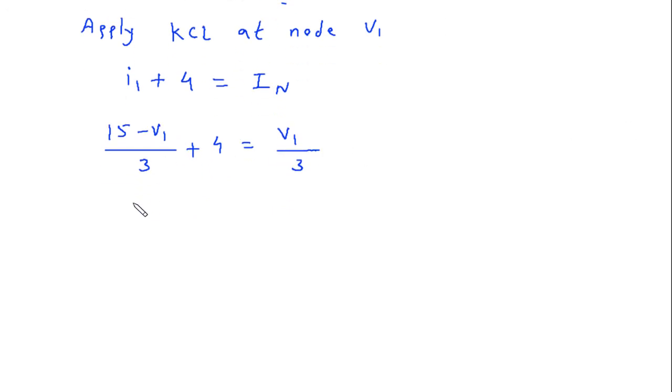So this will be 15 minus V1 by 3 minus V1 by 3 plus 4 minus V1 by 3 is equal to 0. So this will be 5 minus V1 by 3 plus 4 minus V1 by 3 is equal to 0.